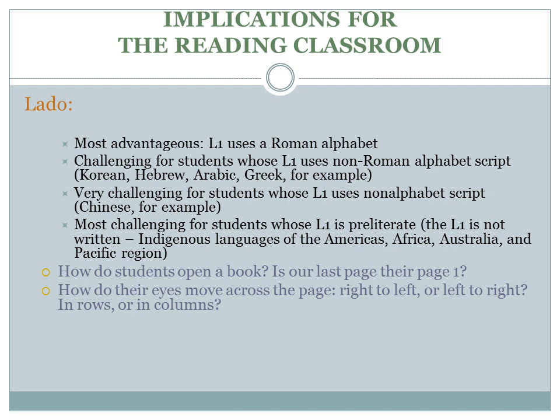Teachers should also be aware of differences in orthographic systems. Writing systems vary greatly in terms of the symbols they utilize. Not all languages are written with an alphabet, and not all alphabets look like the ones we use or are even written in the same direction. Chinese, for example, does not use an alphabet — it uses a logographic system in which each character represents a morpheme. Japanese is a syllabic language, meaning each symbol represents a syllable used in composing words, whereas English uses letters to compose mono- or polysyllabic words.